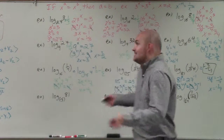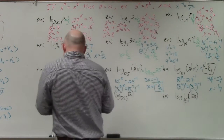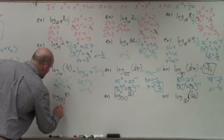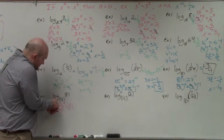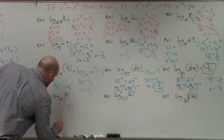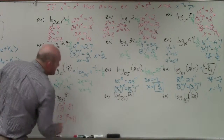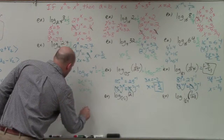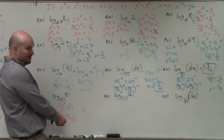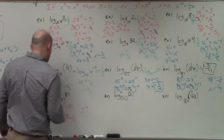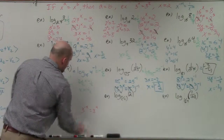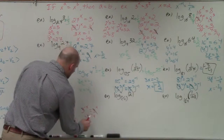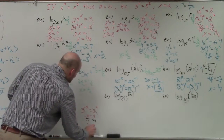Now the fraction is in the base, but it works the same way. I rewrite log base 1/3 of 81 as 1/3 raised to what power equals 81. I rewrite 1/3 as 3 to the negative first power, raised to the x, equals 81. And 81 is 3 to the fourth. Using the power rule, 3 to the negative x equals 3 to the fourth. So negative x equals 4, and dividing by negative 1, x equals negative 4.